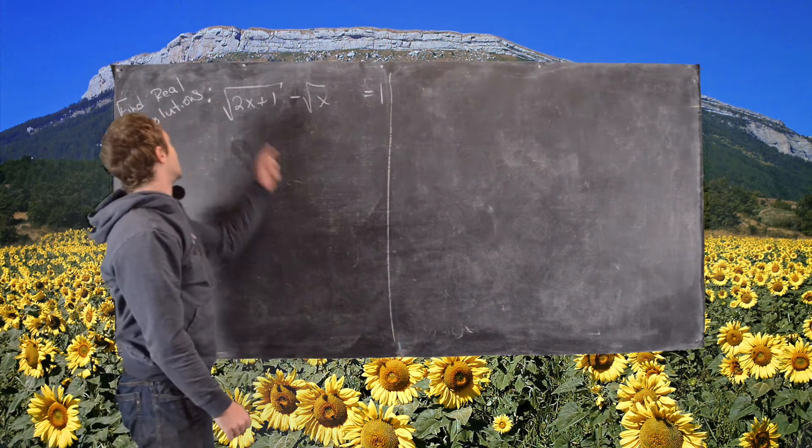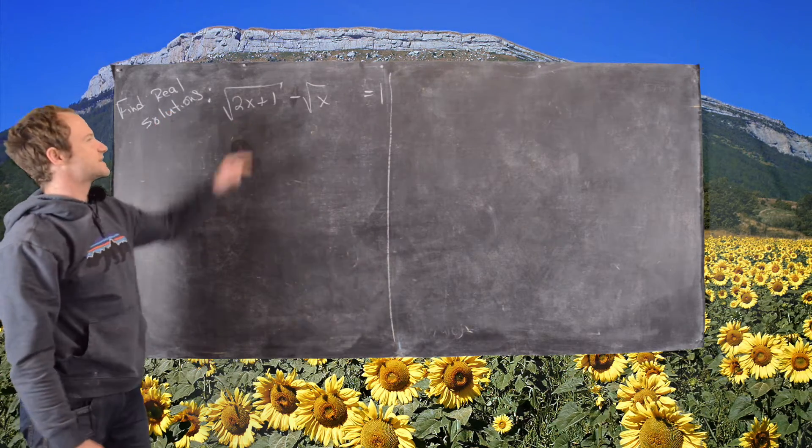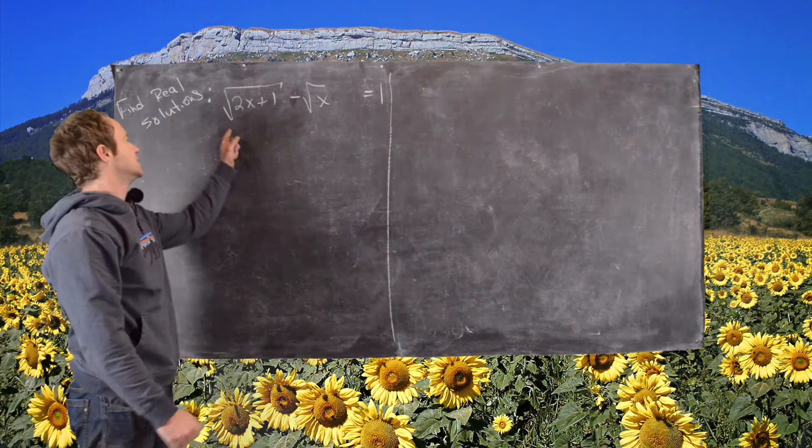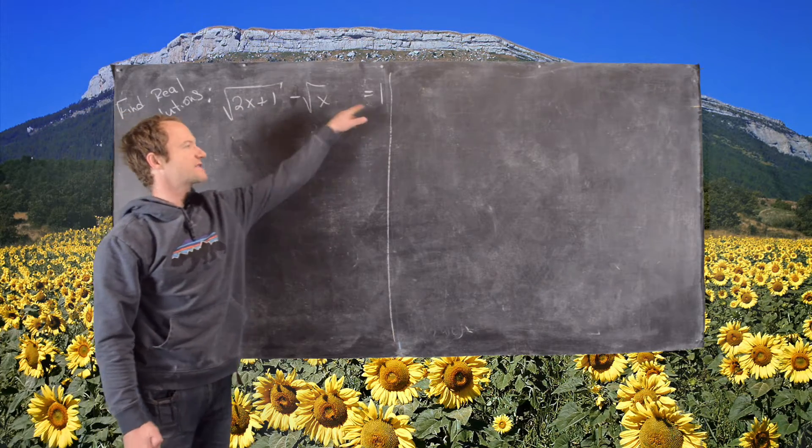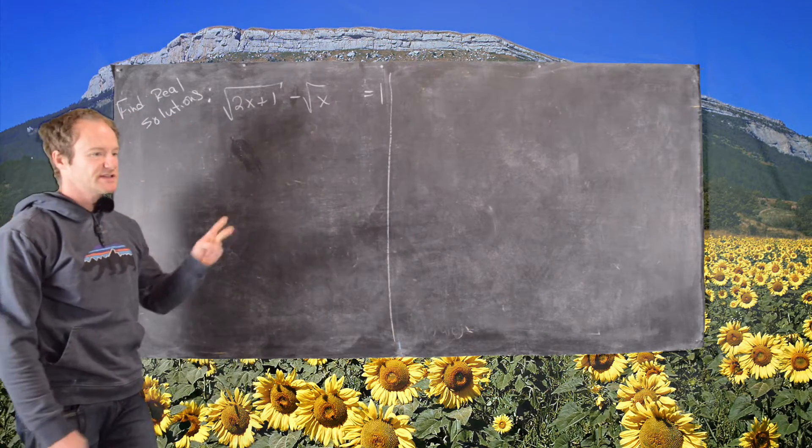Okay, in this video we want to find all real solutions to this radical equation. We have the square root of 2x plus 1 minus the square root of x equals 1. This is going to involve a two-step squaring strategy.